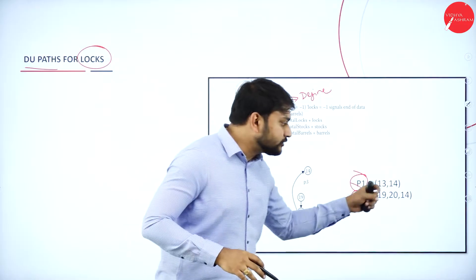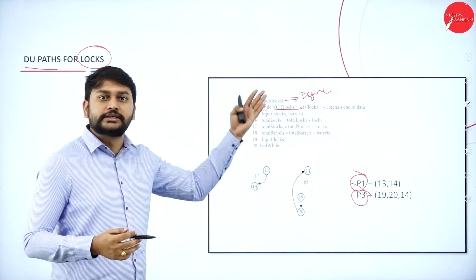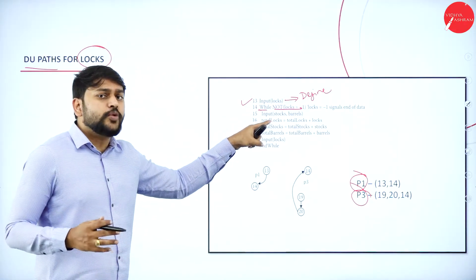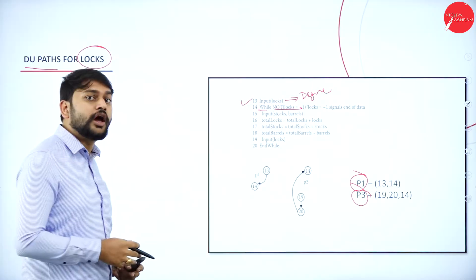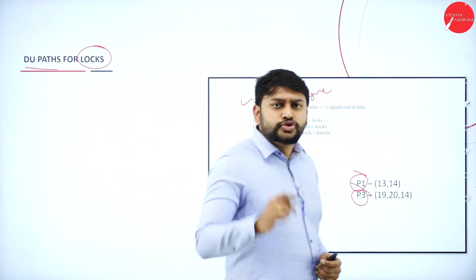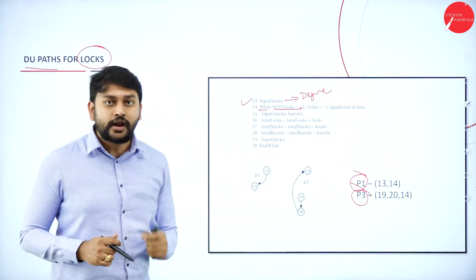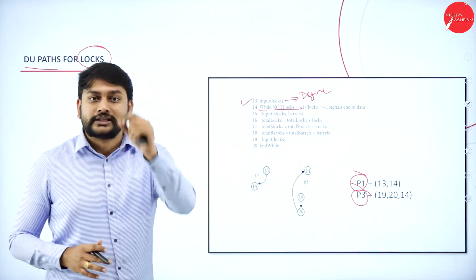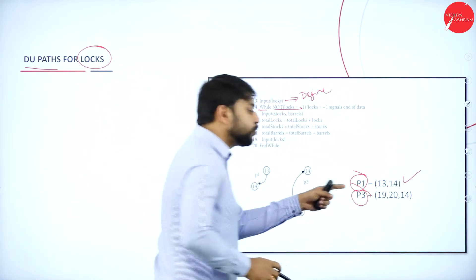At line number 13, I have 'input locks' — so I will call this a define, I am defining the variable here. The last node is 14, where I have 'while not lock is equal to minus one,' so I am using the locks there as a predicate use. I am defining and I am using, so can I call this a DU path? Yes. Also note: a DU path can sometimes also be called a DC path, but a DC path cannot be a DU path.